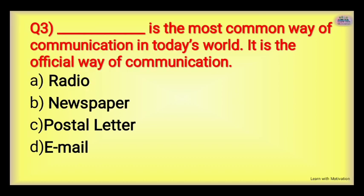Next: Dash is the most common way to communicate in today's world, and it is also an official way of communication. WhatsApp would not be counted officially. Options are: Radio, Newspaper, Post Letter, or Email. The right answer is Email — Email is the most common and official way to communicate. Radio is for announcements, newspaper only prints announcements, and post letters take too much time.